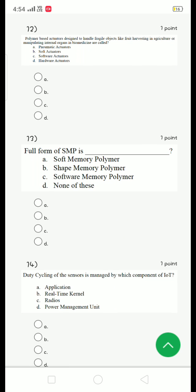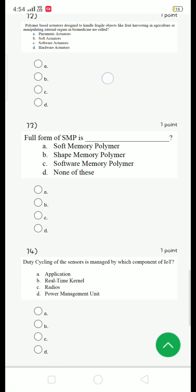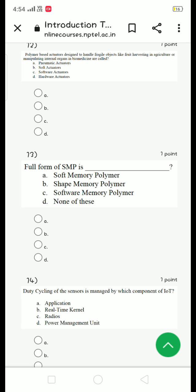Twelfth question: polymer based actuators designed to handle fragile objects like fruit harvesting in agriculture or manipulating internal organs in biomedicine are called. The answer for the twelfth question is option B, soft actuators.